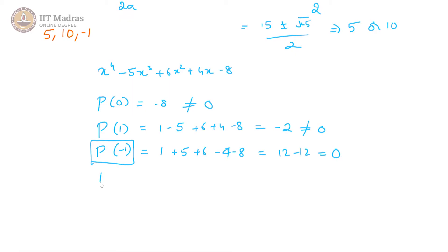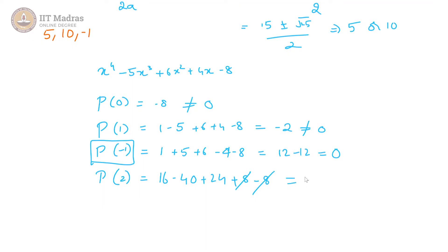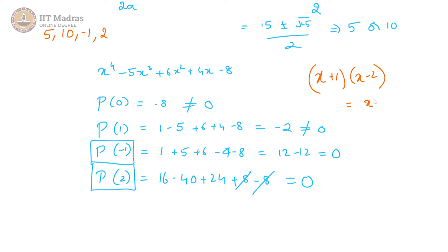Going back to our trial and error, let us try p(2). p(2) gives us 16 minus 40 plus 24 plus 8 minus 8. So we get 16 plus 24 is 40, and 40 minus 40 is 0. So we have another root: 2. We now have two roots for our quartic — minus 1 and 2 — and those two roots give us another quadratic factor which is (x+1)(x−2), that is x² minus x minus 2.